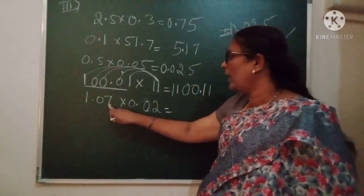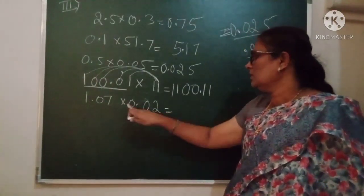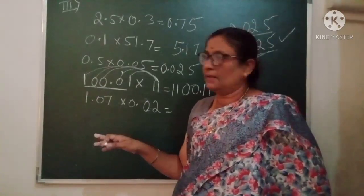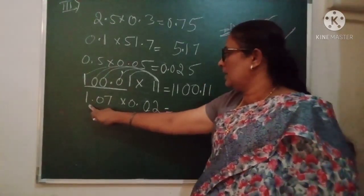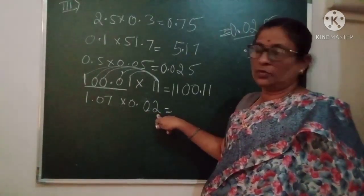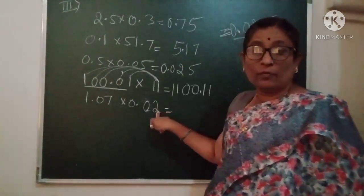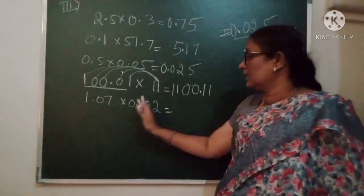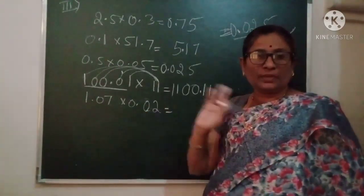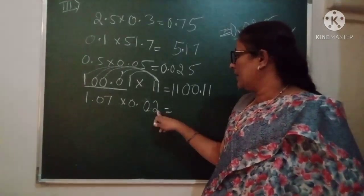Now look at this one: 1.07 × 0.02. This is a type of direct multiplication. This is 107 without decimal point, and this is only 2. 0.02 means 2. Because while multiplying, we are not considering the decimal point. Afterwards, in the product, we keep the decimal point.